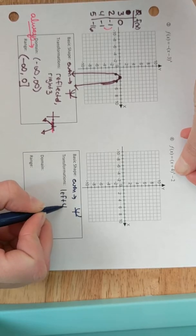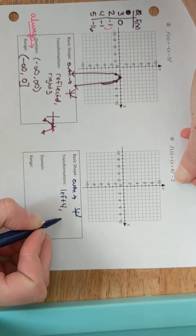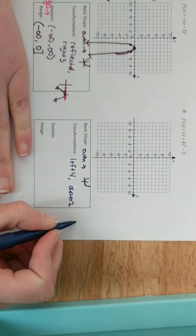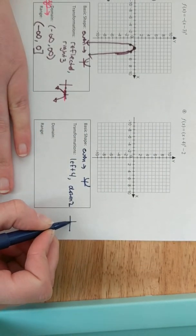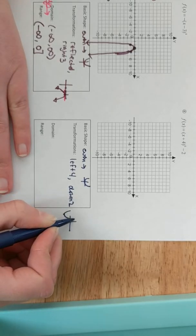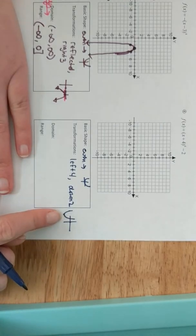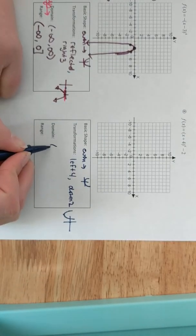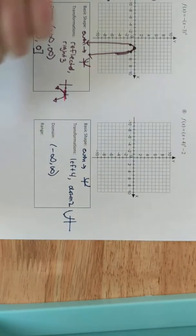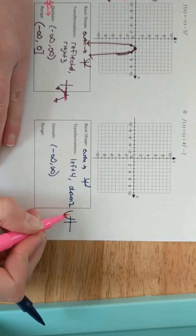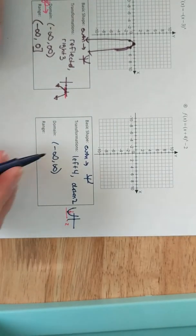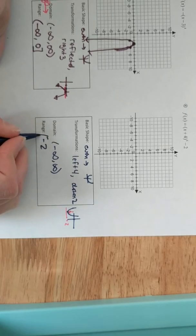And the other one, basic shape, also even, which means that it's going to have that parabolic type shape. And so it has two transformations, inner value of 4, opposite of the plus, so it's left 4. And then outer value of negative 2, so that's going to be down 2. So this would take that vertex from the middle over left 4, down 2, and then I'm expecting a shape like this.